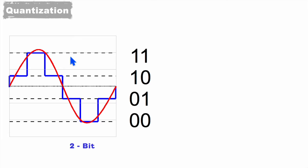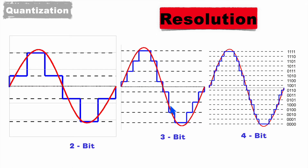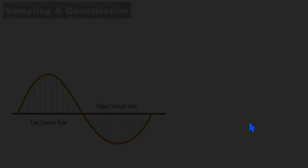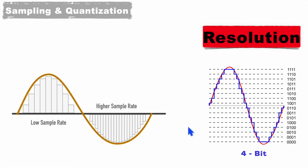Comparing 2-bit resolution with 3-bit resolution, you can easily see how much better it is in the case of 3-bit resolution. And for 4-bit resolution it is even better for tracking this analog signal. So in this way, by sampling at a higher rate and having higher resolution, we can track the analog signal in a very efficient manner.